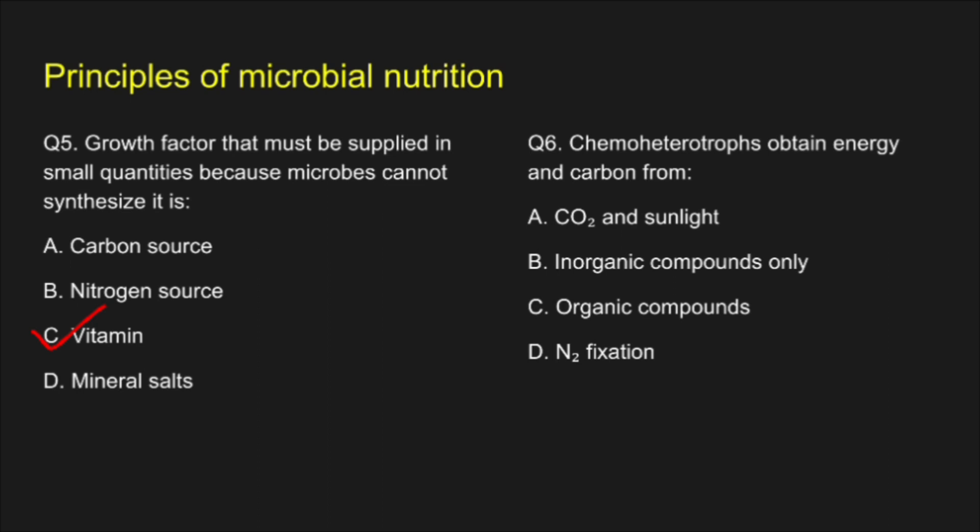Question 6. Chemoheterotrophs obtain energy and carbon from — A. Carbon dioxide and sunlight, B. Inorganic compounds only, C. Organic compounds, D. Nitrogen fixation. The correct answer is organic compounds, option C.